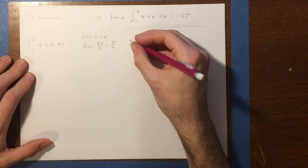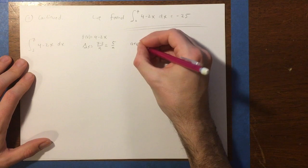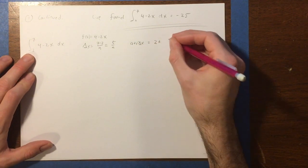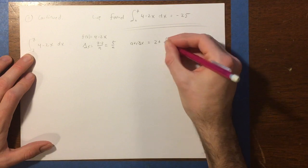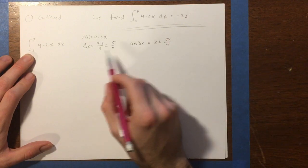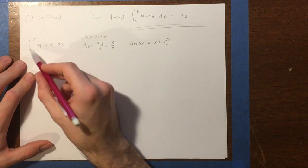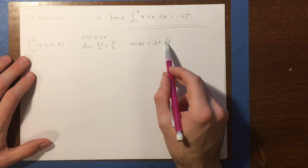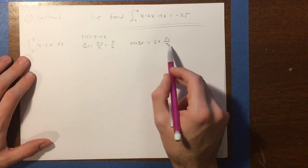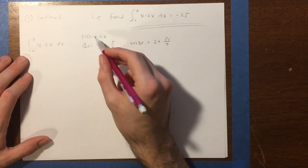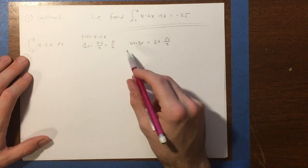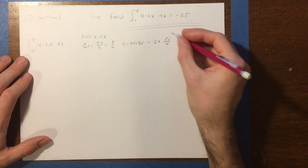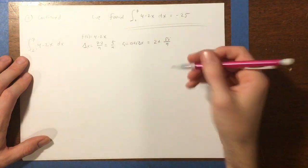And then my right endpoint is going to be a plus i delta x. In this case, that's going to be 2 plus 5i over n. So 2 is my a, a being the lower limit of integration here. And then I'm adding i times delta x. And I already found my delta x is 5 over n. So I've got my function here. I've got my delta x. I've got my right-hand endpoints. This is the ci, by the way. This is what I'm going to use. I'm using right-hand endpoints for my sample points.